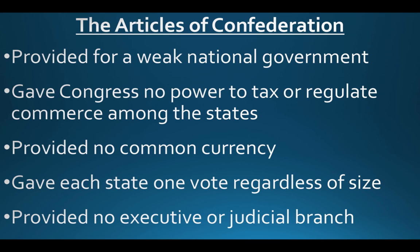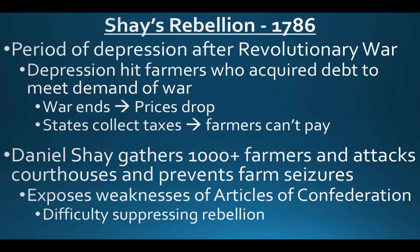Additionally, the Articles of Confederation provided no executive — no chief leader for the group — and also there was no judicial branch from a national perspective. There were state judicial branches, but not federal ones. Keeping those weaknesses in mind, you actually ended up having an event that would trigger the move from the Articles of Confederation to the United States Constitution.